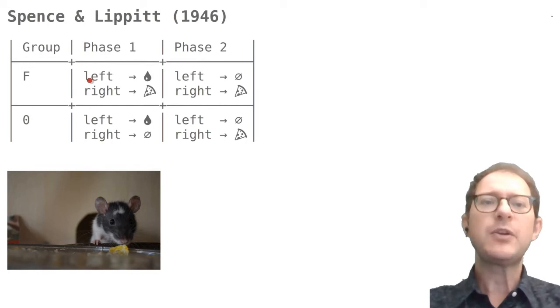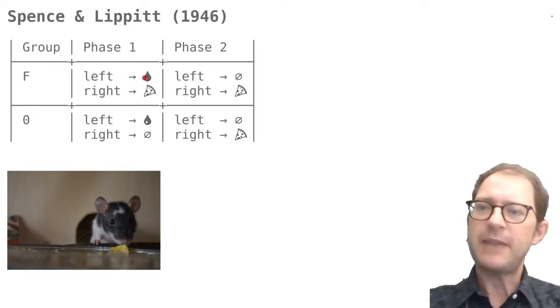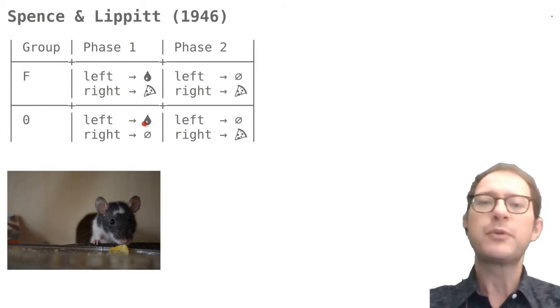In the first phase, all rats were thirsty, but not hungry, and could find water by going left. This is indicated in the design table by left to water for both groups of rats.